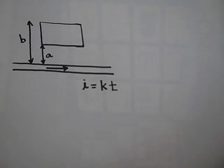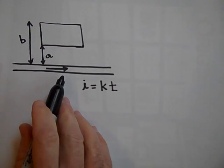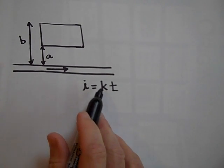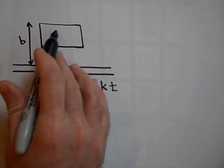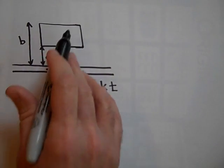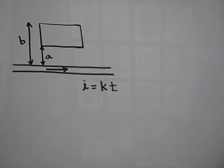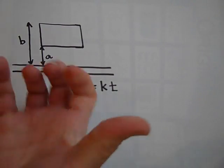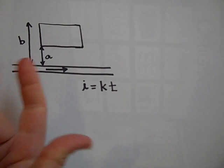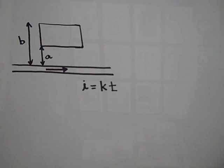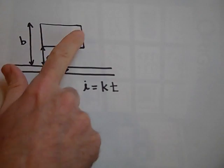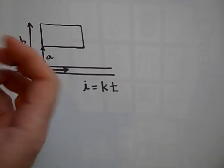We have a current flowing through this wire and the current is increasing with time. First of all, can you tell me which way the current will be induced in here? So if the current is increasing with time, we have dots, and it's going to try and make X's because it wants to keep the flux from changing.